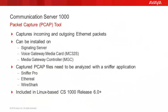The typical way of capturing Ethernet packets is by connecting a computer with a sniffer application to the network. Arranging all the equipment can be quite complicated. The CS1000 Packet Capture Tool, also known as the PCAP tool, captures incoming and outgoing Ethernet packets. This tool is included in all Linux-based CS1000 cards and servers, released 6.0 and above, and is therefore convenient for troubleshooting networking issues within the CS1000 deployment.